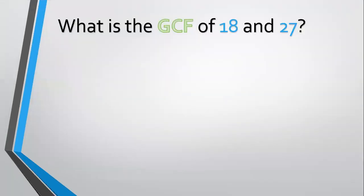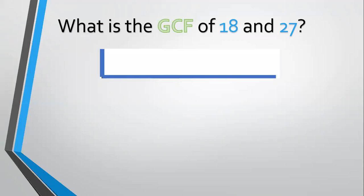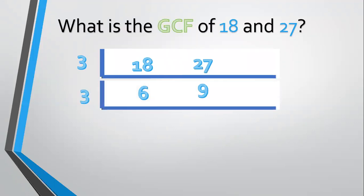Now let's have an example. What is the GCF of 18 and 27? Let's list them: 18 and 27. Think about what prime number can divide both 18 and 27. We'll use prime numbers, so the common factor here is 3. 18 divided by 3 equals 6. 27 divided by 3 equals 9. Then 6 and 9 still have a common factor — that is 3.